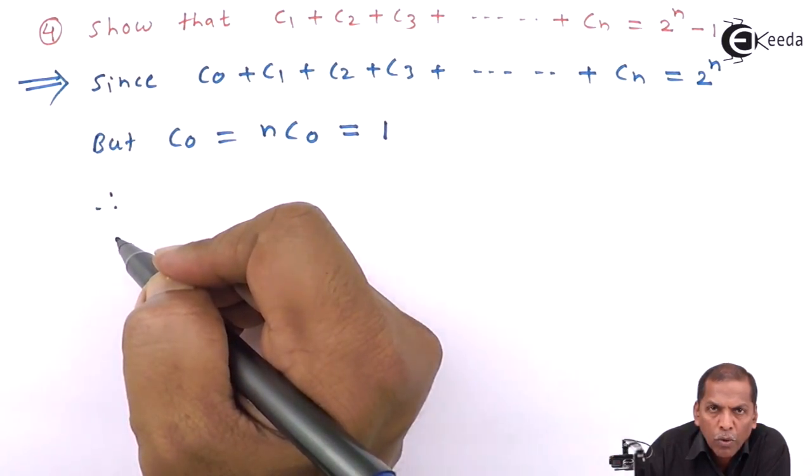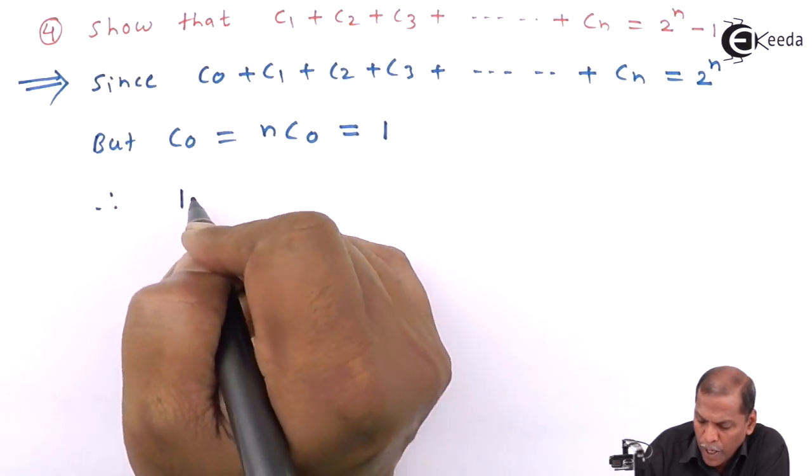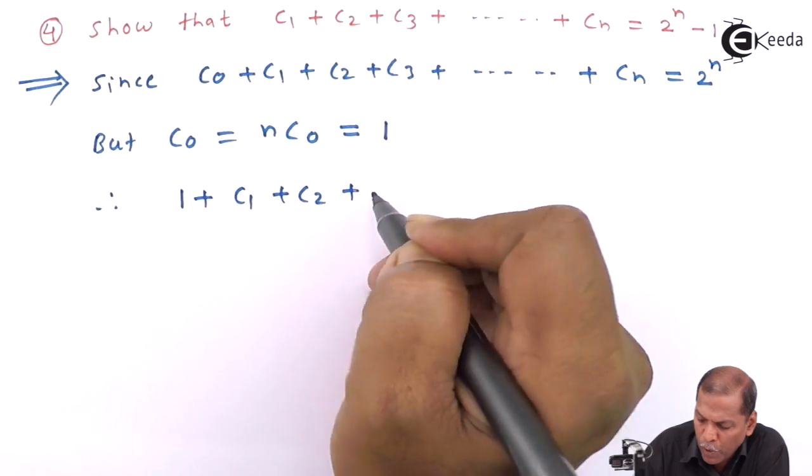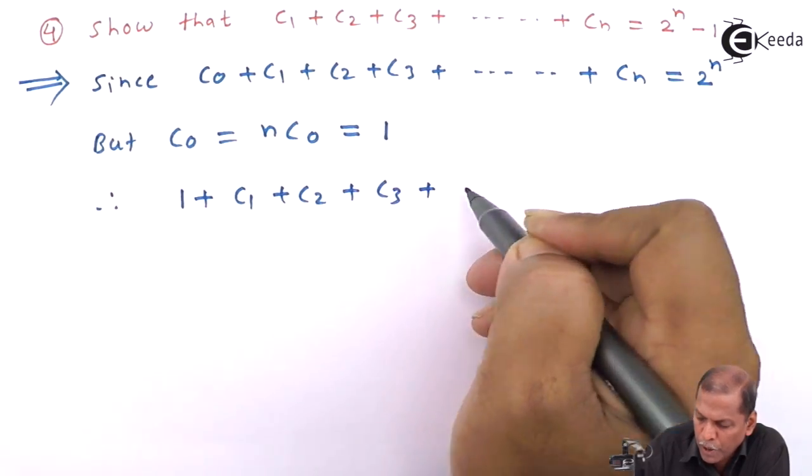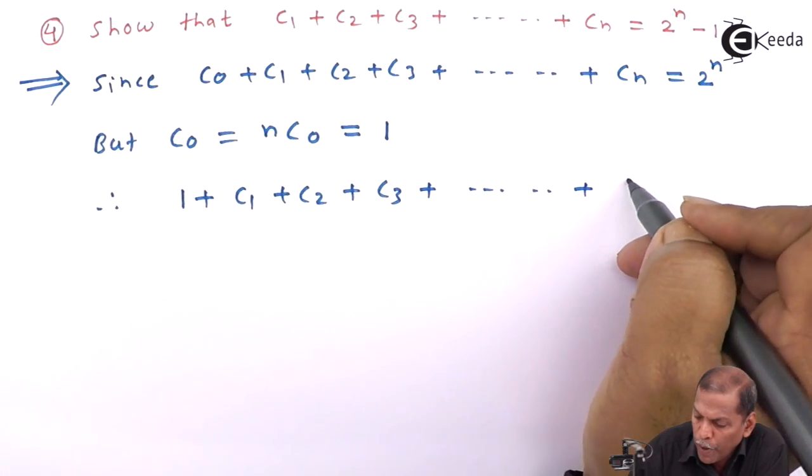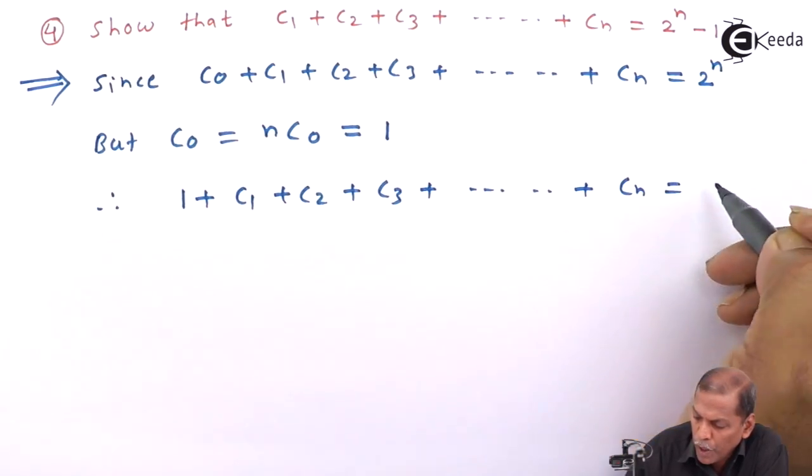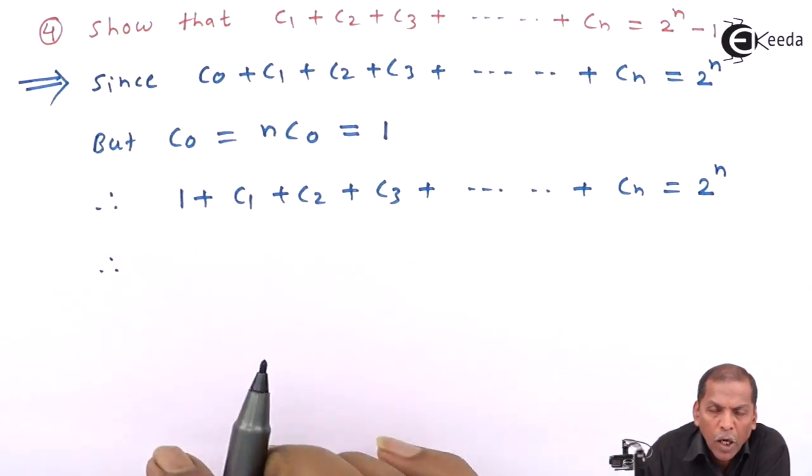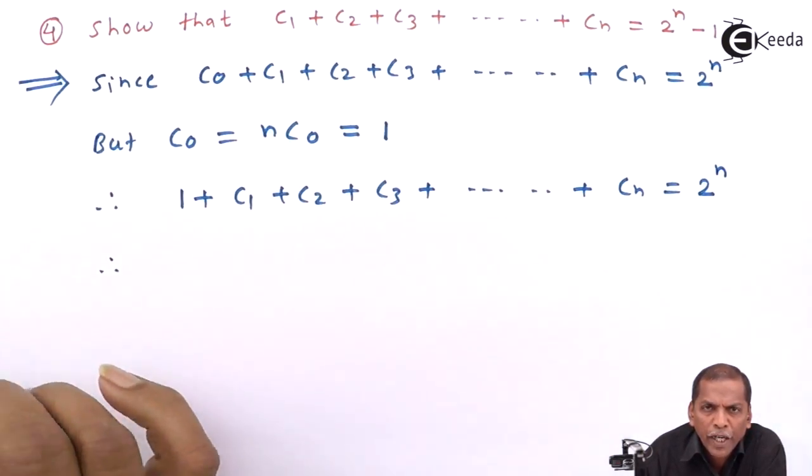So the above statement becomes 1 plus C1 plus C2 plus C3 going on up to plus Cn is equal to 2 raised to n. Now this 1 we have to shift it on the right-hand side.